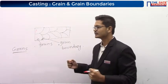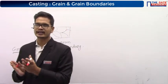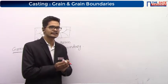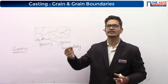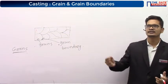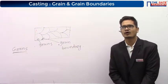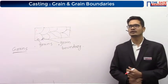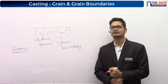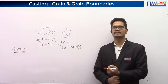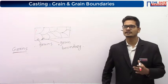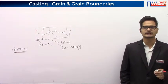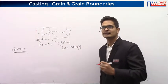You might have heard that metals are arranged in the form of crystals. Inside the metals, the atoms are arranged in the form of crystals. You might have heard the names face-centered cubic, body-centered cubic, simple cubic — all these names. Do you know that? The atoms are arranged in the form of crystals inside the metals.